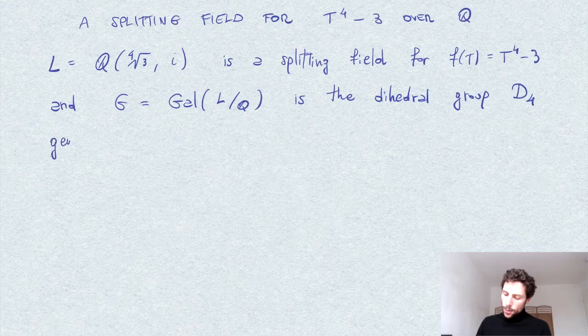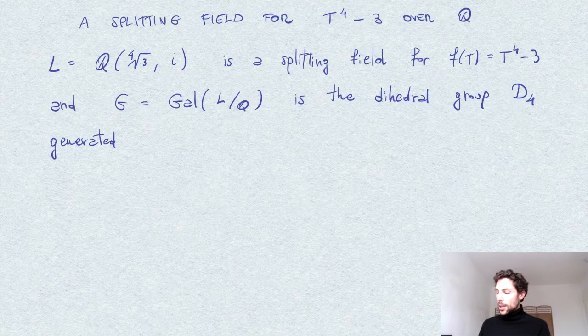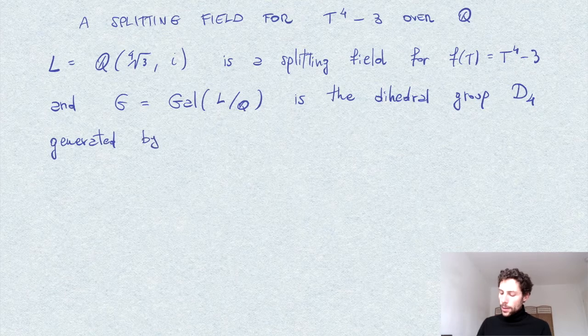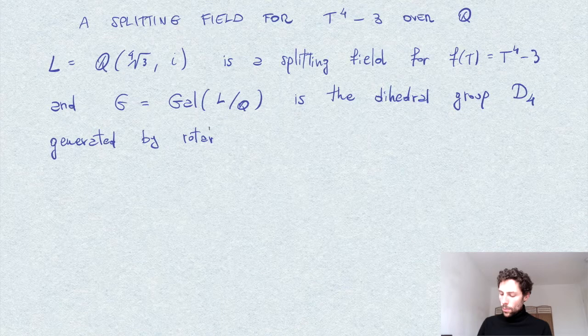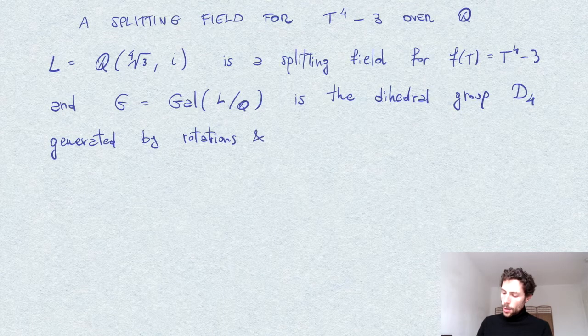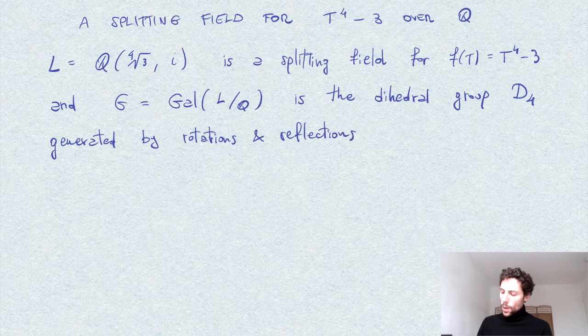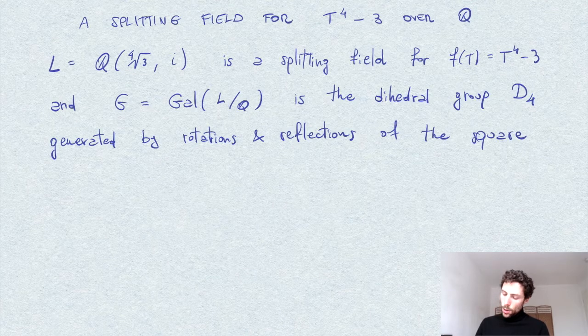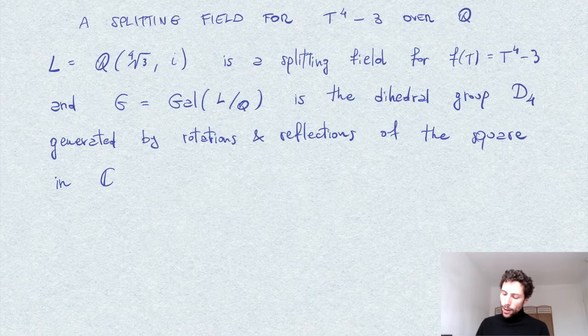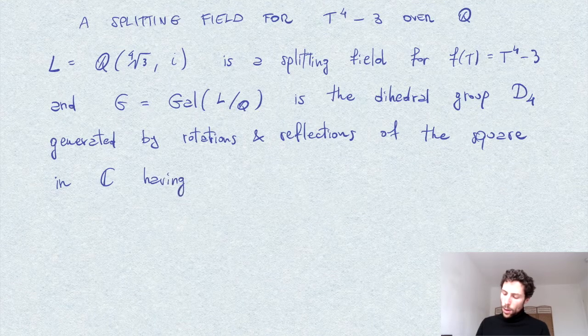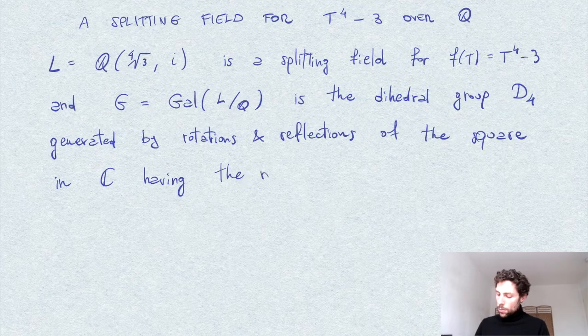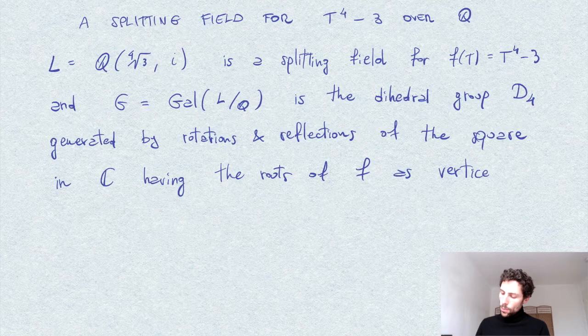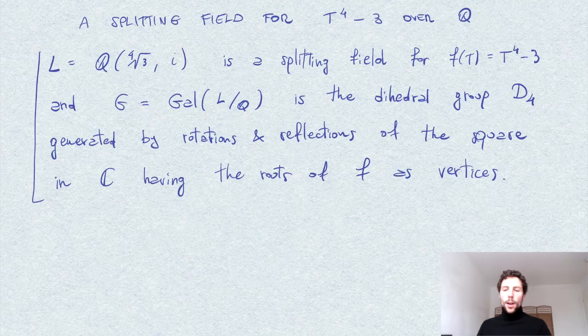Which is generated, so not only abstractly isomorphic to the symmetries group, but concretely it's the D4 which is generated by the symmetries, or the rotations and reflections of the square in the complex plane C having the roots of f as vertices. So this is our statement.